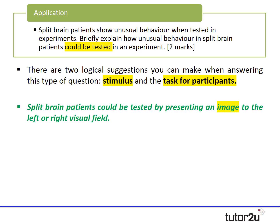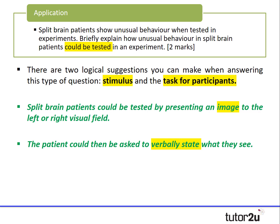A model answer might look something like this: split-brain patients could be tested by presenting an image to the left or the right visual field — here I'm talking about the stimulus. The patient could then be asked to verbally state what they saw — and here I'm talking about the task for the participants. A nice easy way of picking up those two marks, talking about the stimulus or the task, or in this case both.